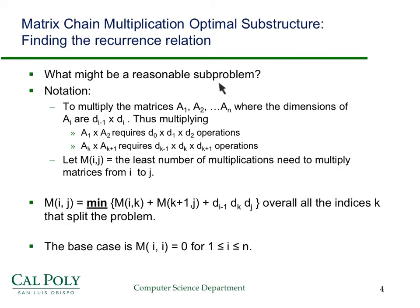So what is a reasonable subproblem? Well, basically it's some subset of these matrices and how many operations they require versus another subset of consecutive matrices. Those will both be subproblems of the concatenation of that set.